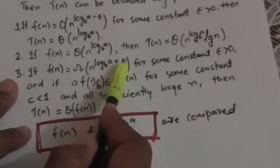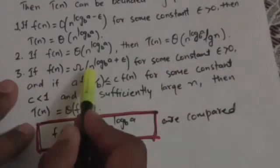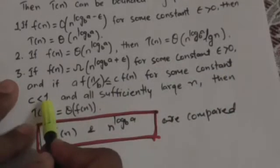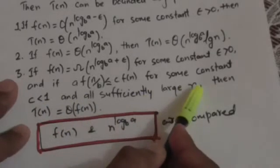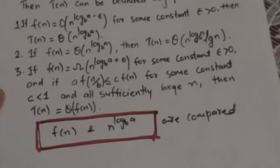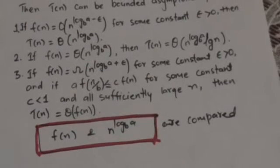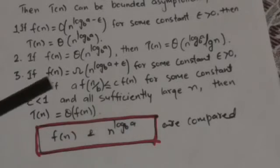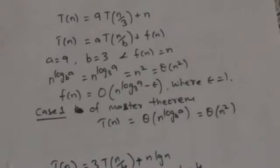The third case is: if f(n) = Ω(n^(log_b(a) + ε)) for some constant ε > 0, and if a·f(n/b) ≤ c·f(n) for some constant c < 1 and all sufficiently large n, then T(n) = Θ(f(n)). In each of the three cases, f(n) is compared with n^(log_b(a)), and the solution of the recurrence is determined by the larger of the two functions.